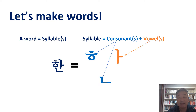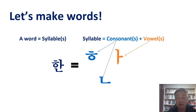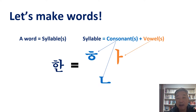A word is a syllable or a few syllables. For example, 한글 is two syllables: 한 and 글. So before we make a word, we have to make a syllable first. Let's make this syllable: 한. 한 is 하, 엔, 나 — those are consonants — and 아 is the vowel. So 한 is 하 plus 아 plus 나. 한 is made up of two consonants and one vowel. Korean syllables are made like this.